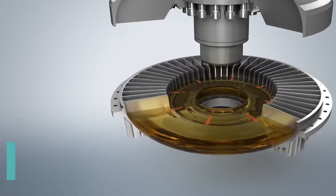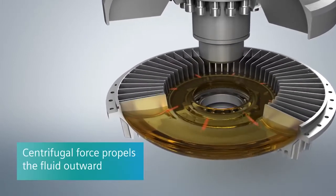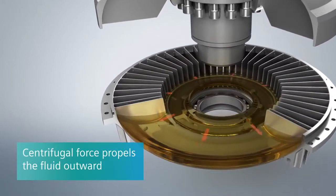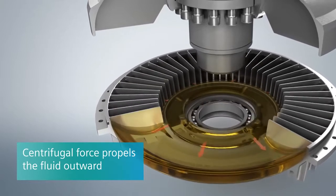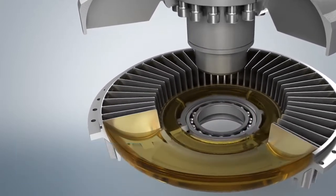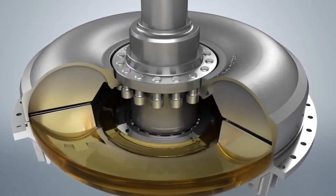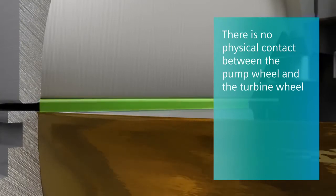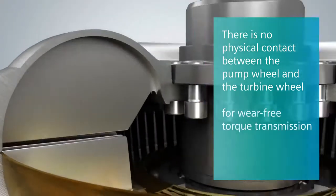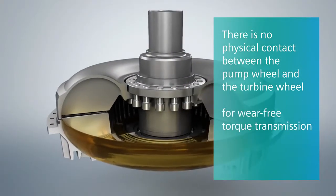In the initial situation, the rotation of the pump wheel generates the centrifugal force that propels the fluid outward. It continues to rise. The slow motion depiction shows a process that actually takes place within a fraction of a second. There is no physical contact between the pump wheel and the turbine wheel. As a result, the torque is transmitted without any wear.